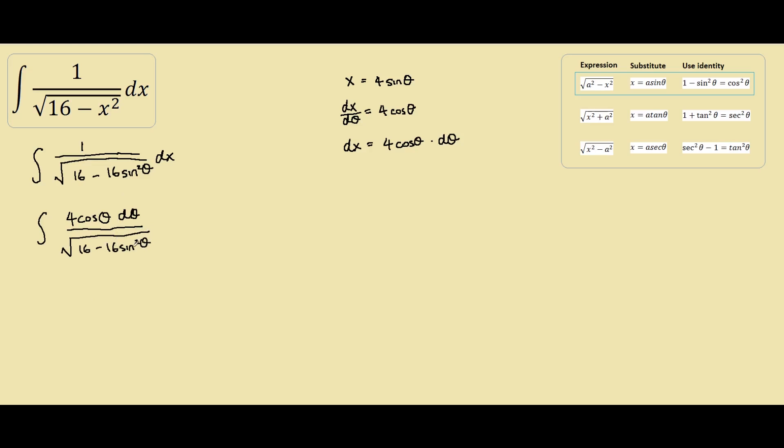Do you see how we have a common factor of 16 on our denominator? We can factor that out. 4 cos theta d theta over the square root of 16 bracket, take 16 out, so 1 minus sin squared theta.